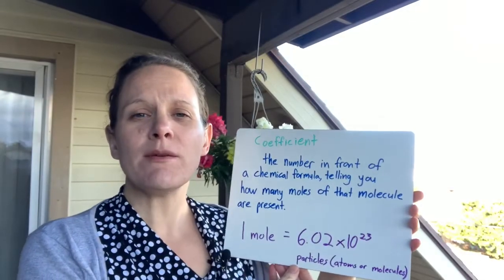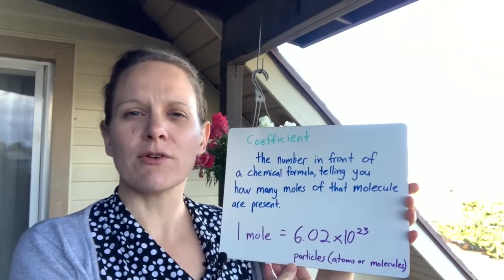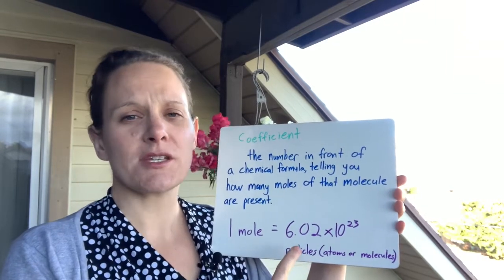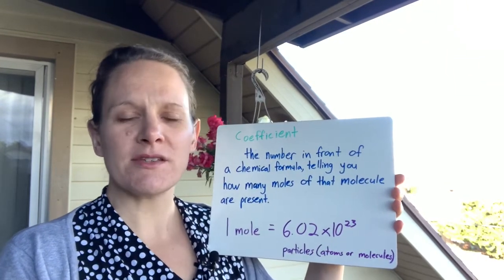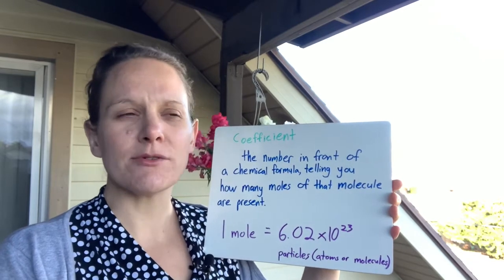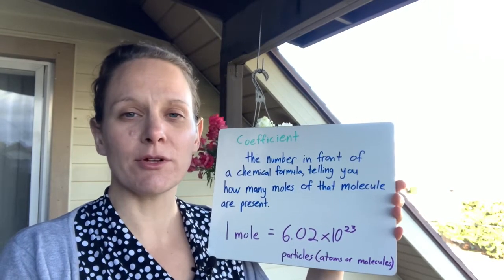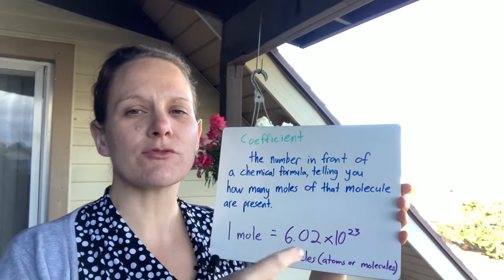Coefficients tell us how many moles of each compound there are in our chemical formula. Remember, a mole is equal to 6.02 times 10 to the 23rd particles. In this case, that can mean atoms or molecules, usually molecules, when it comes to chemical equations. The coefficient just goes right in front.